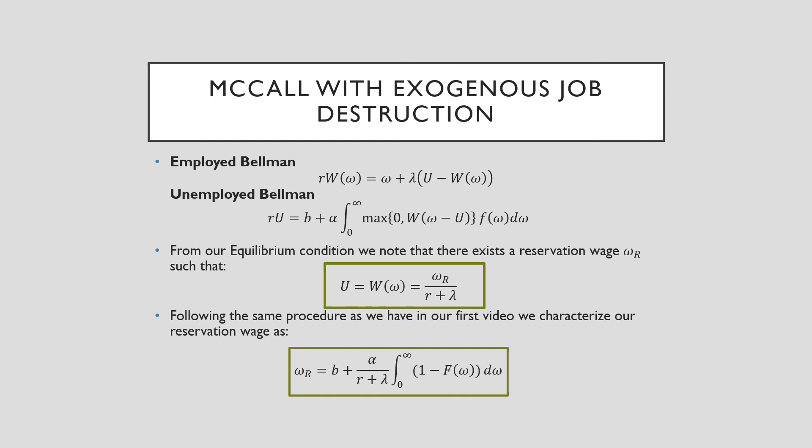Following the same procedure as we have in our first video, we characterize our reservation wage as follows, which is pretty much exactly like we saw in our continuous time case, just that in the denominator of this second term, we have plus lambda. That's how it enters.